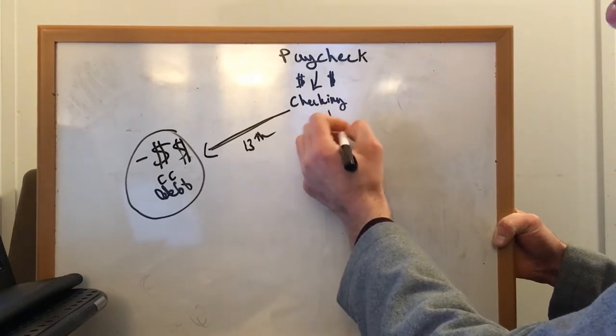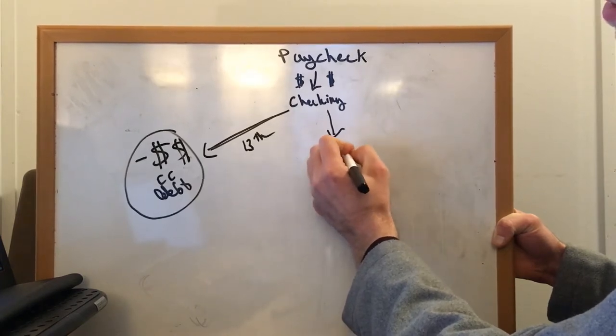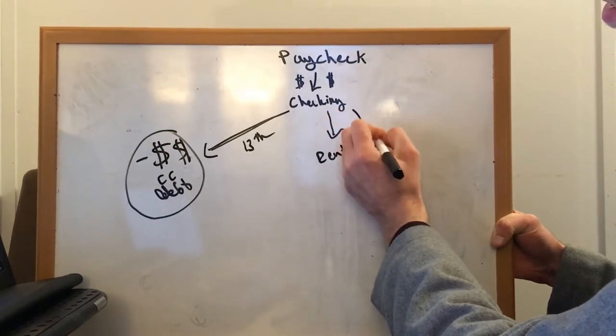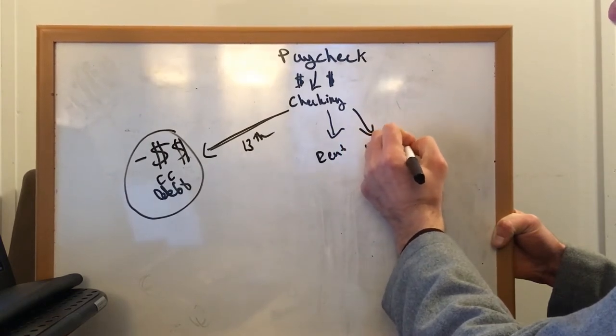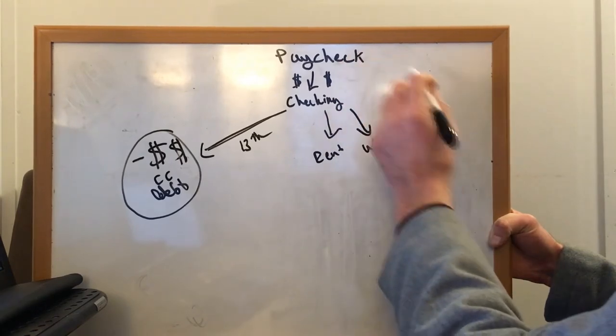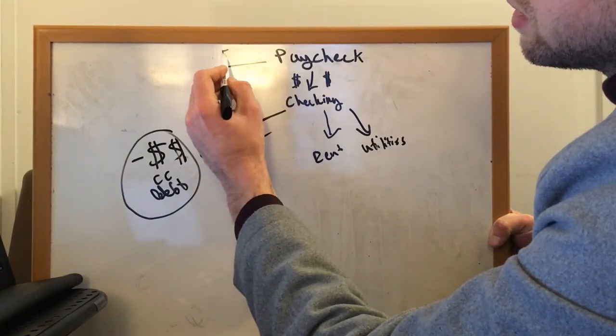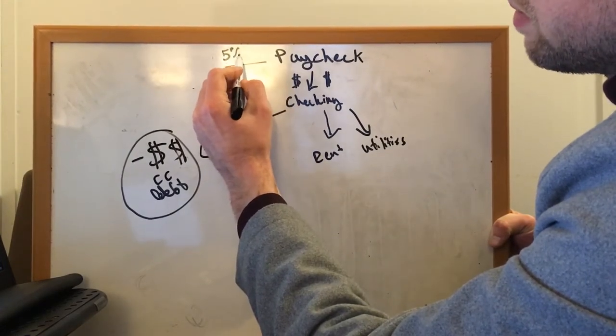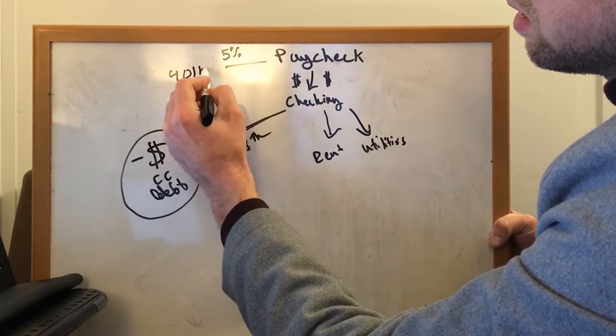The rest would go to pay my rent. And then utilities. Anything that I need to pay with a checking account. Also, I guess I got to mention this over here. My paycheck, I would have 5% would come out for my employer sponsored 401k.